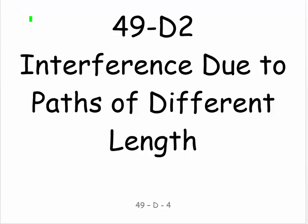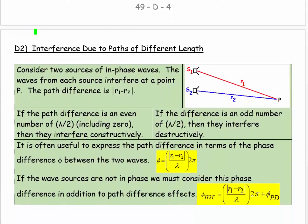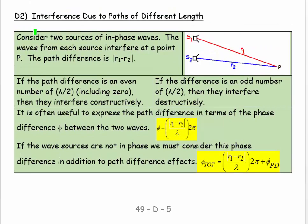Welcome, this is 49D2 and the title is interference due to paths of different length. Let's have a look at this diagram. We have a source of wave energy, maybe a speaker in sound in air, or maybe little dippers that cause ripples on the surface of water. It's a two-dimensional problem.